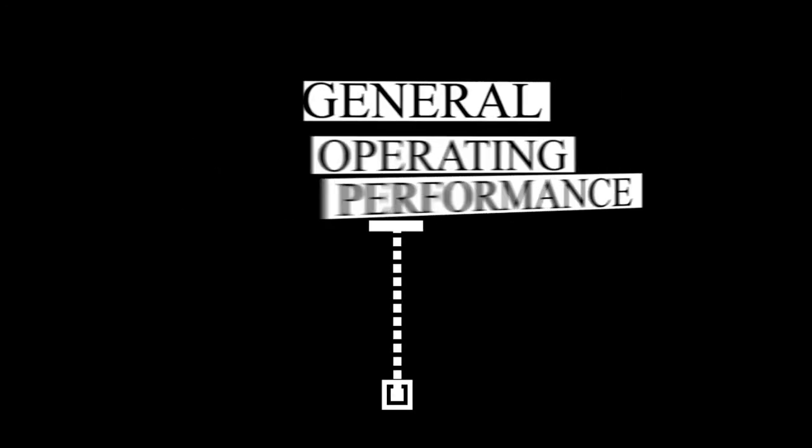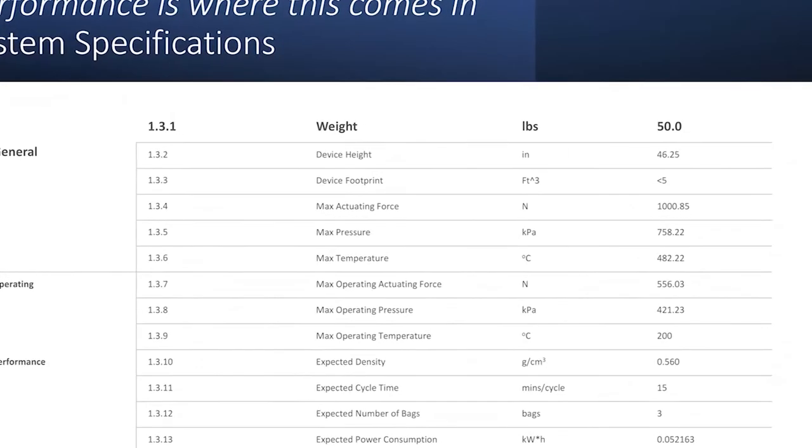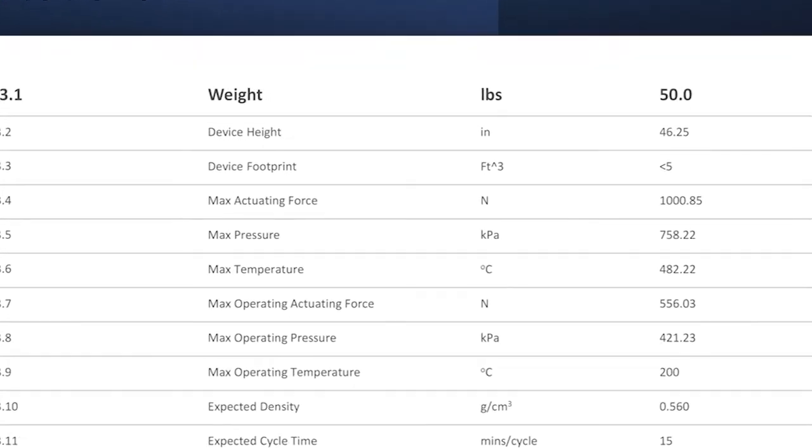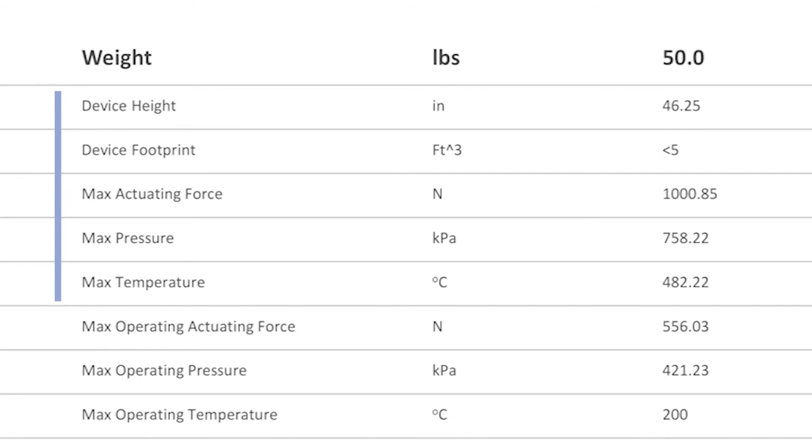The system specifications can be split into three categories: general top level characteristics, operating specs, and performance specs. Looking at the general category, the device's height is about 4 feet or 46 to 47 inches. The device's footprint is a little less than 5 cubic feet or 400 inches squared which is equivalent to that of a washer. The max actuating force of the device is 1000 newtons, where the max pressure is about 760 kilopascals with a maximum operating temperature of 480 degrees celsius.